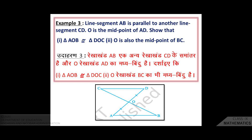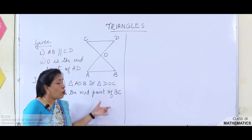The question is: line segment AB is parallel to another line segment CD. O is the midpoint of AD. Show that triangle AOB is congruent to triangle DOC, and that O is also the midpoint of BC.